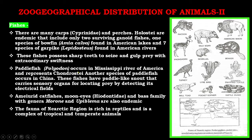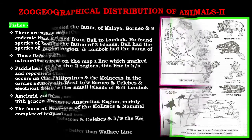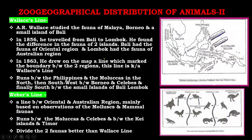The paddlefish Polyodon occurs in the Mississippi River of America and represents the Chondrostei. Another species of paddlefish occurs in China. These fishes have a paddle-like snout that carries sensory organs for locating prey by detecting its electrical field. Amurid catfishes, mooneyes, and bass family with genera Morone and Ambloplites are also endemic. The fauna of the Nearctic region is rich in reptiles and is a complex of tropical and temperate animals.